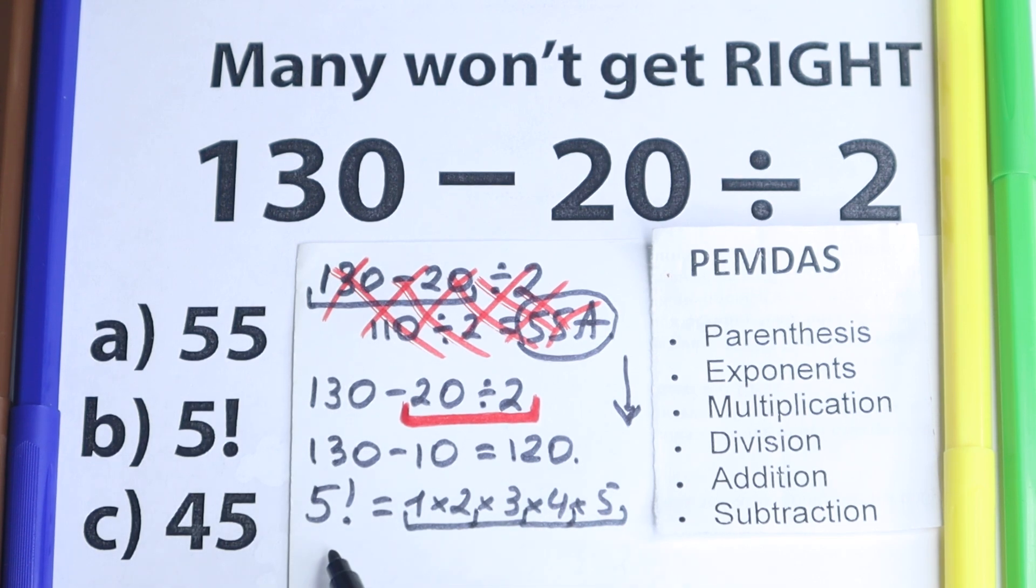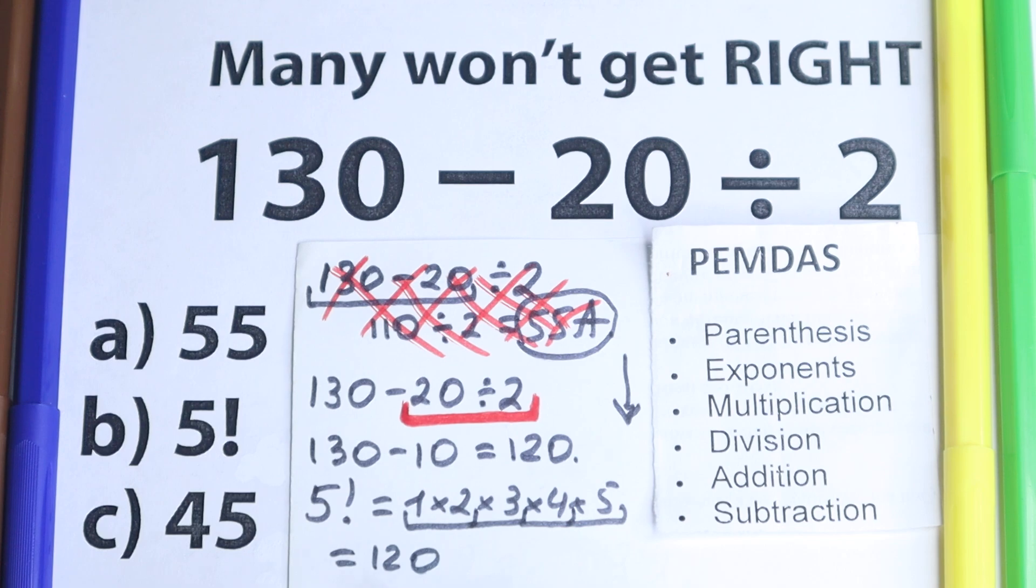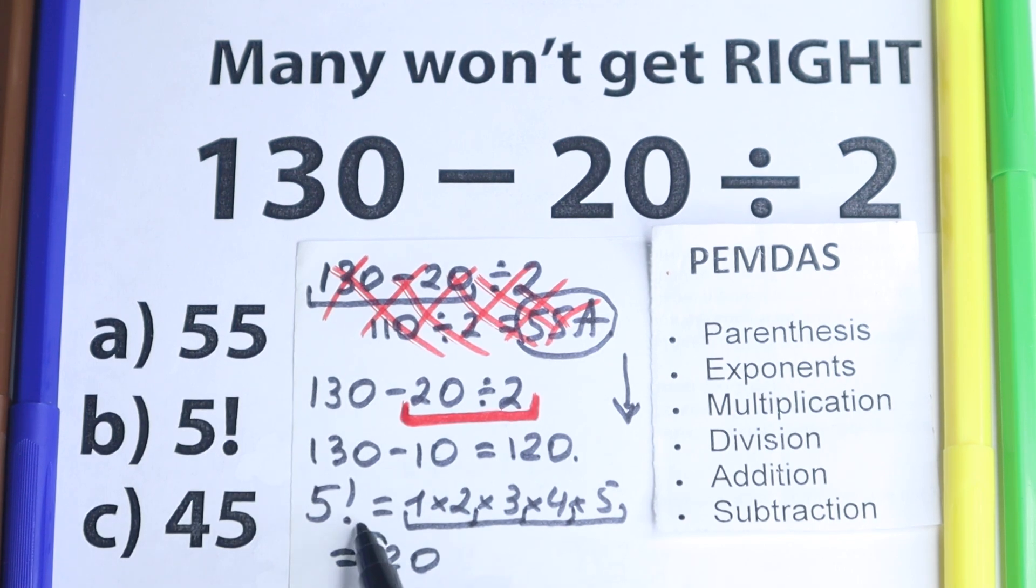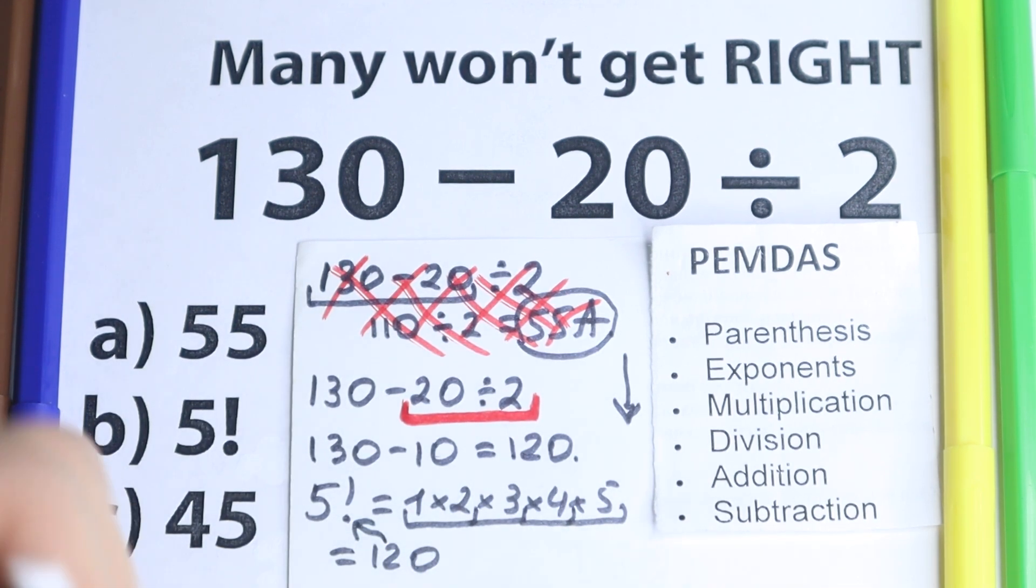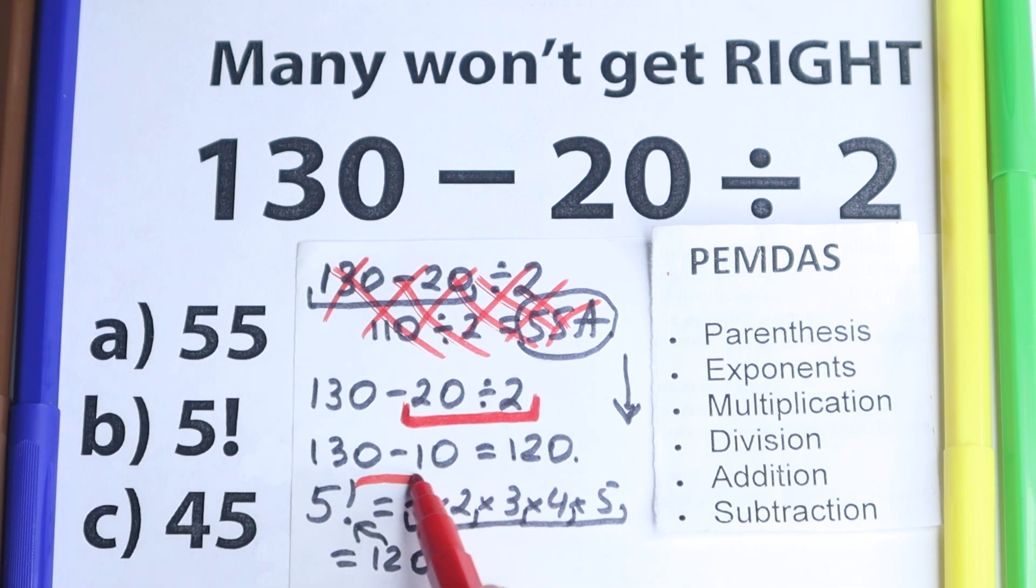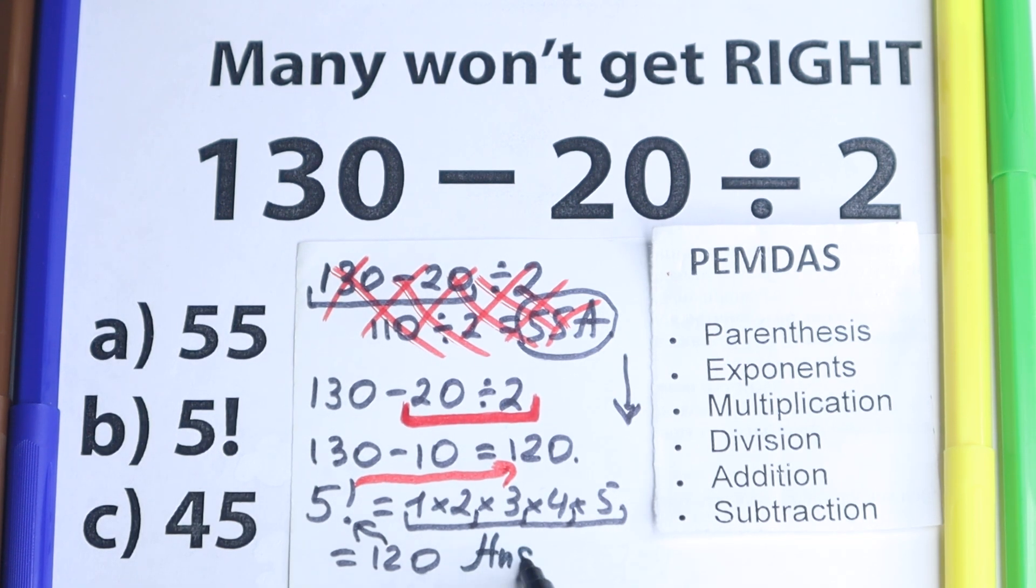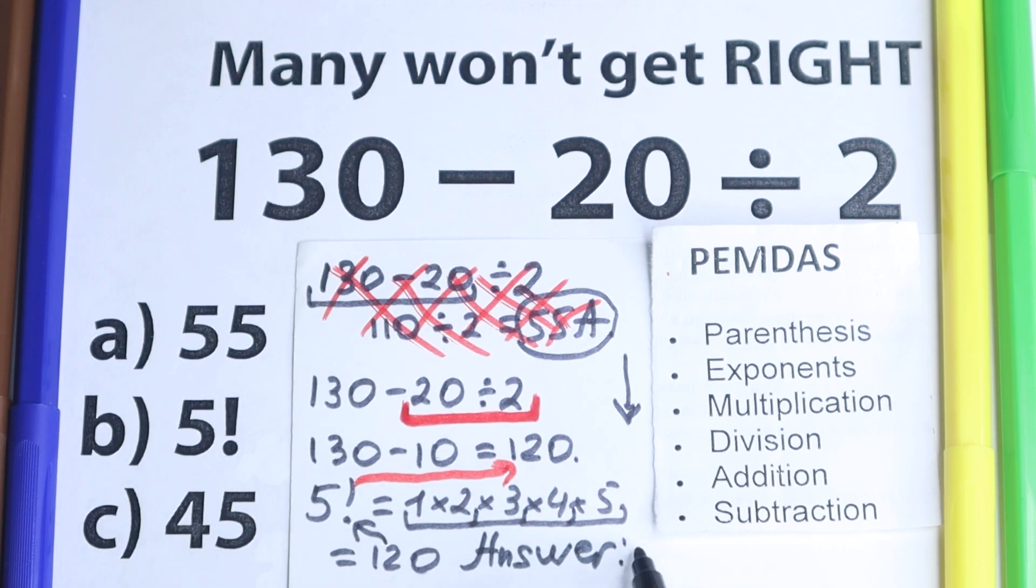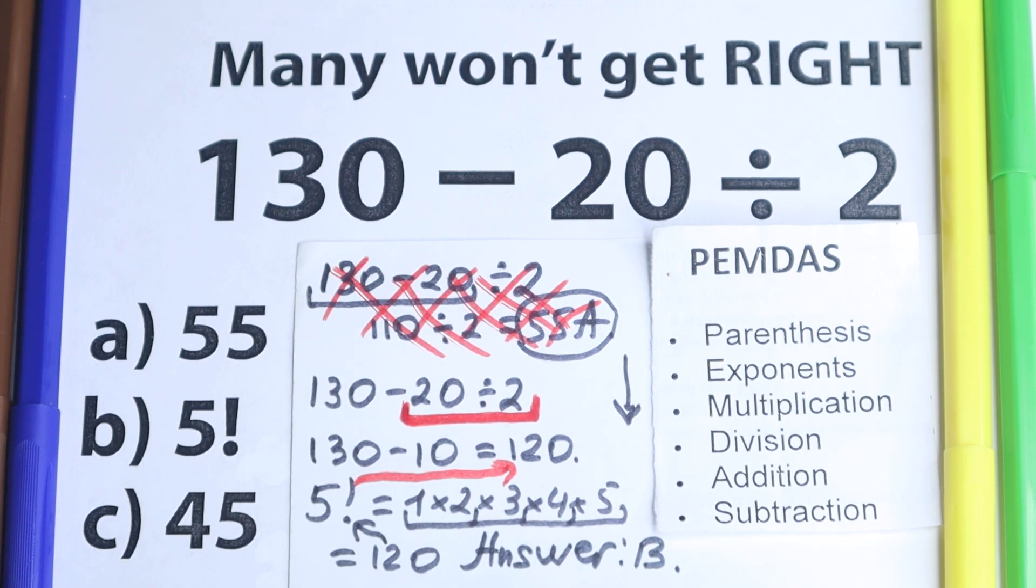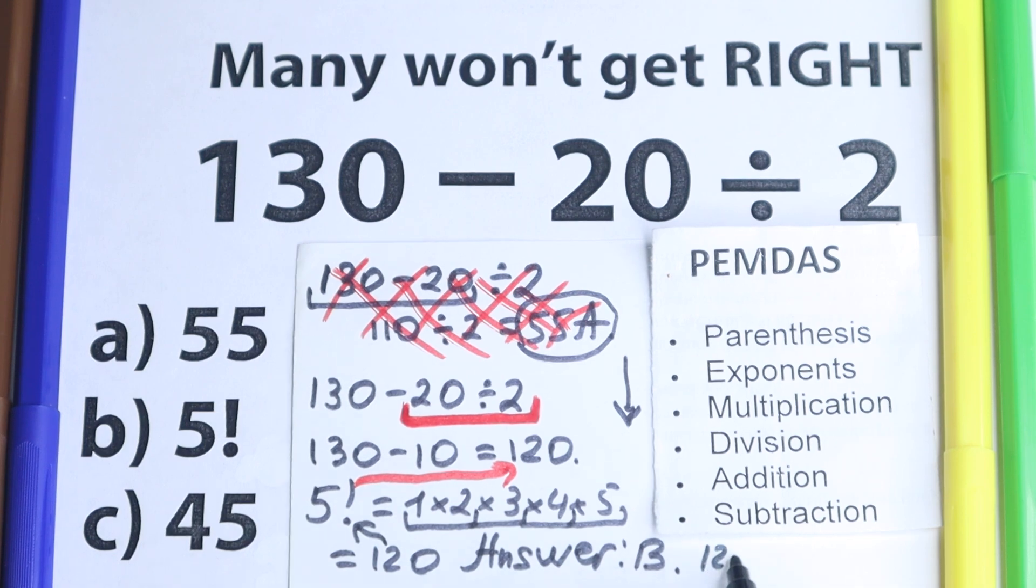This is brilliant, because this equals 120, which is absolutely the same as, of course, 5 factorial. This 5 factorial is absolutely the same as our answer. We have 120, the correct answer according to PEMDAS. So we can easily write our answer right here. Our answer is 5 factorial, which is option B. And if you're talking about the exact value, 120.